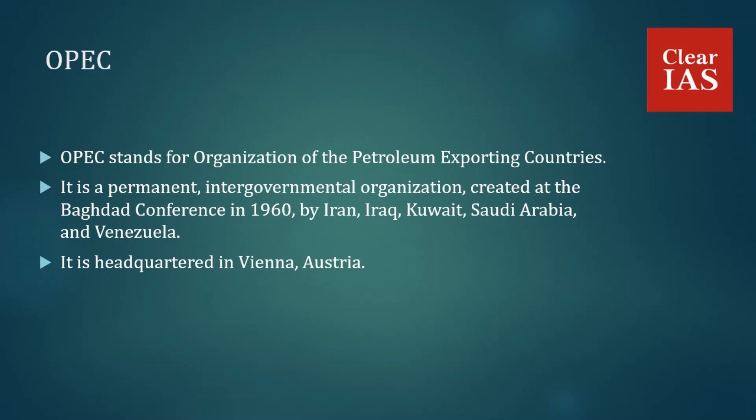OPEC stands for Organization of Petroleum Exporting Countries. It is a permanent intergovernmental organization created at the Baghdad Conference in 1960 by Iran, Iraq, Kuwait, Saudi Arabia, and Venezuela. It aims to manage the supply of oil in an effort to set the price of oil in the world market, in order to avoid fluctuations that might affect the economies of both producing and purchasing countries.